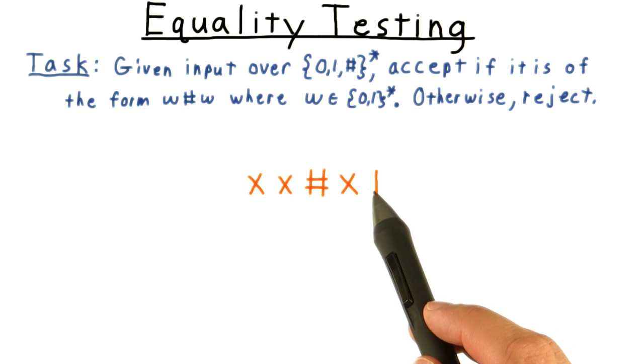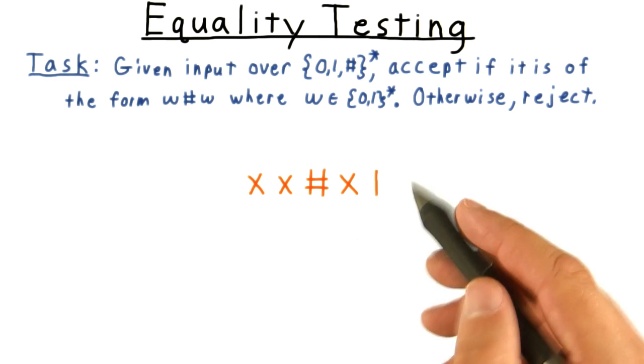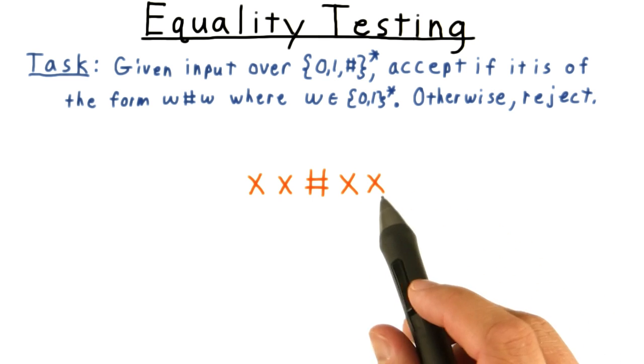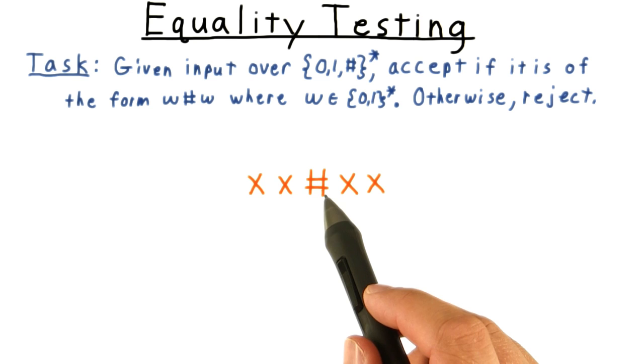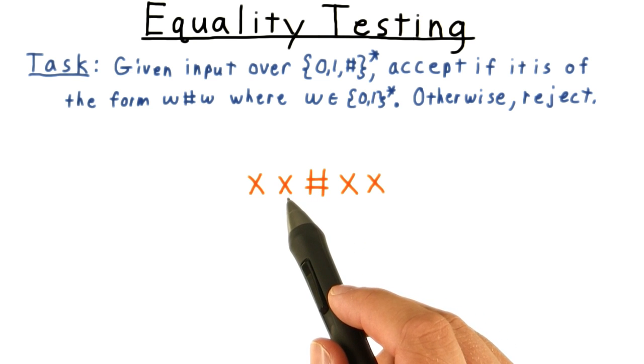This is a 1, which matches what we xed out before. That's great. We x it out, and then we rewind past the hash to the first x that we encounter.